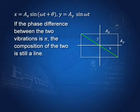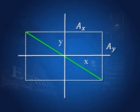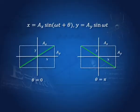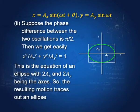If the phase difference between the two perpendicular vibrations is π instead of 0, the straight line path changes its slope from ay/ax to −ay/ax. So with θ = 0 the oscillation is along one diagonal, and with θ = π it is along the other diagonal of the bounding rectangle.